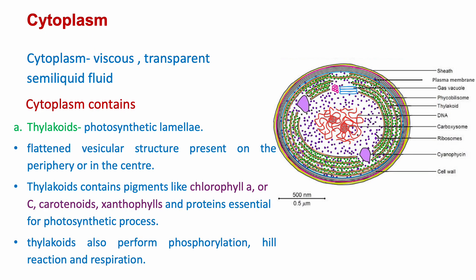Cytoplasm is a viscous, transparent, semi-liquid fluid which contains all the cell inclusions necessary for cell functions. The first inclusion is thylakoids, also known as photosynthetic lamellae. These are flattened vesicular structures that can be present on the periphery or in the center. Apart from photosynthesis, thylakoids also perform phosphorylation, the Hill reaction, and respiration.